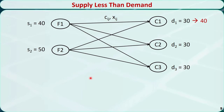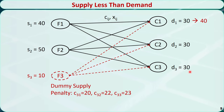If a problem is unbalanced, we need to balance it first before using the transportation simplex method. In this example, the demand of customer 1 is increased from 30 to 40, so the total supply (90) is less than the total demand (100). In order to balance the problem, we introduce a dummy supply node called factory 3 with a capacity of 10. Any amount sent from factory 3 to a customer represents the unmet demand of that customer. For each unit of unmet demand, we introduce a penalty: $20 for customer 1, $22 for customer 2, and $23 for customer 3.